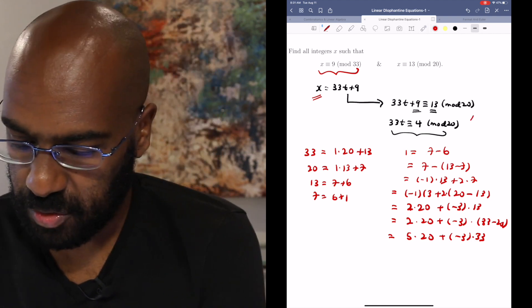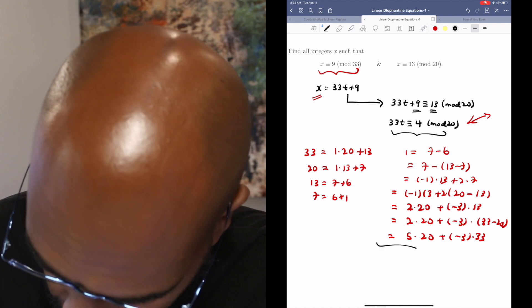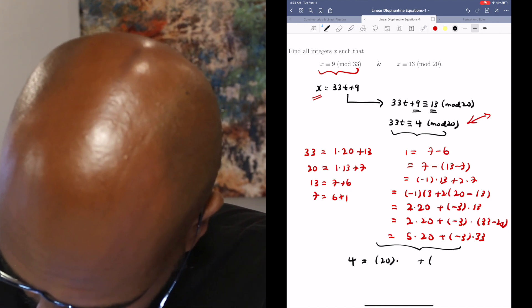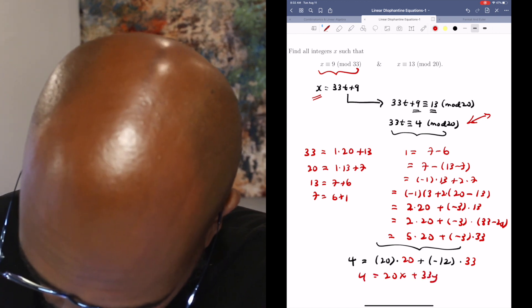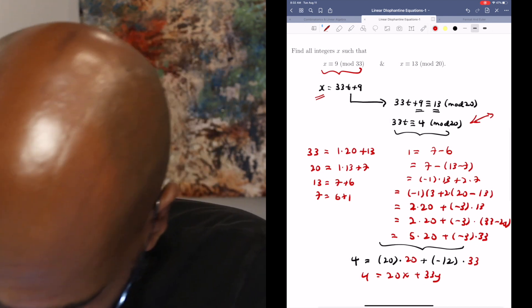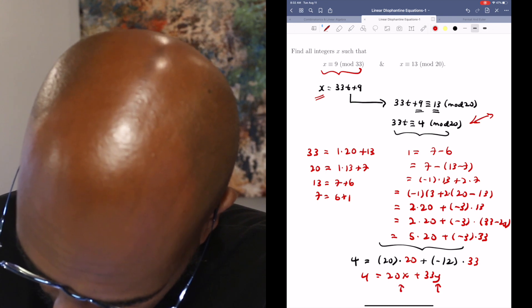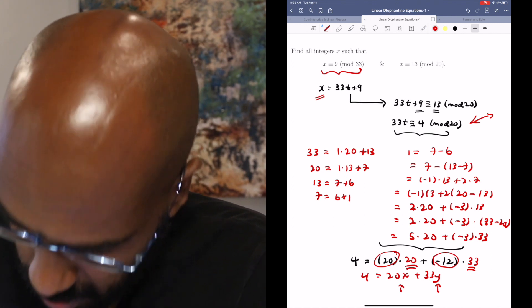So if you want to figure out a solution to this thing, to figure out one particular solution, we can multiply this entire equation here by 4. So we get 4 is 20 times 20 plus negative 12 times the 33. So the Diophantine equation 20x plus 33y equals 4 has a particular solution, and that solution is this solution right over here.